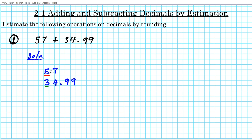So if you're rounding to the tens place, you draw a partition and then you look at the number behind it. If it's five and up, you round up; if it's zero to four, no more. So seven is five and up, which means we're going to round up — we're going to add one to the five in the tens place to get the estimation. So the estimation of 57 to the nearest ten is 60. Remember, when you round up, all the digits behind it become zero. So five plus one is six, giving us 60.